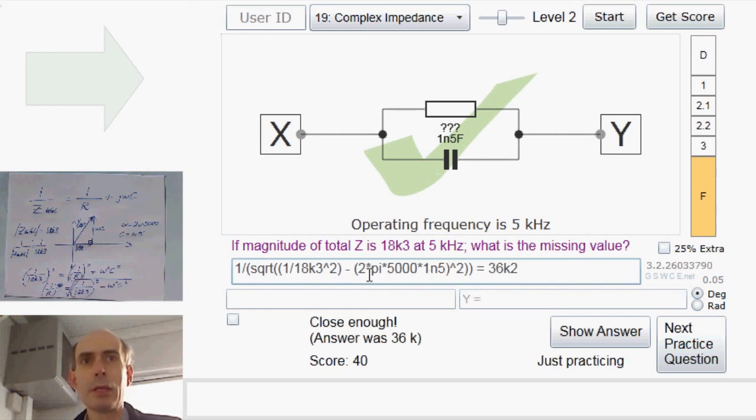For this type of problem, you have to know and use the fact that resistors are perfectly real, and capacitors or inductors are perfectly imaginary in their impedance.